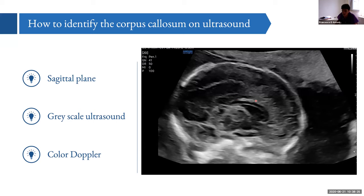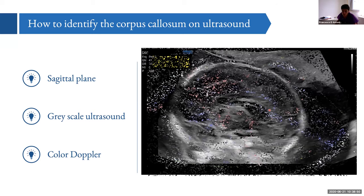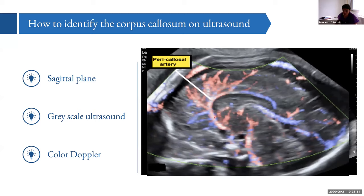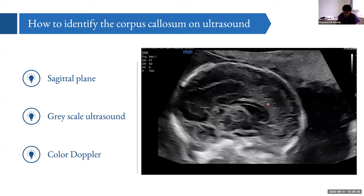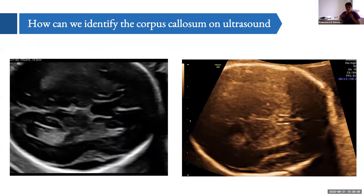On the mid-sagittal view, the corpus callosum is seen as a thin anechoic structure in the anterior-middle part of the brain, surrounded by two echogenic lines. It has a comma-like shape. We identify four parts: the rostrum, the genu, the body, and the splenium, which is the most posterior part. The structure develops in a craniocaudal sequence. We can also apply color Doppler to visualize the pericallosal artery branching around the structure.